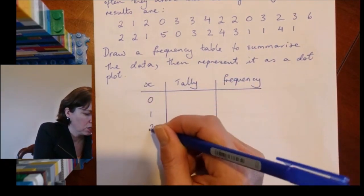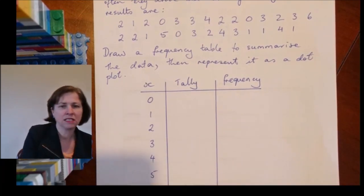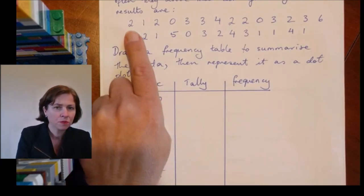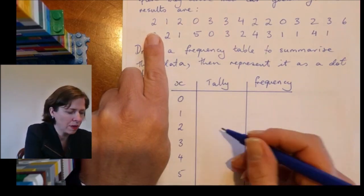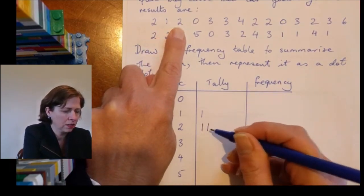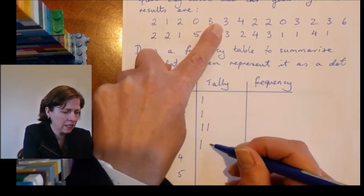For my x's I'm going to have zeros, ones, twos, threes, fours, fives, and sixes. Then I just go through and I mark off my tally. I've got a two here, so I'll mark off a two, a one, a two, a zero, a three, another three.